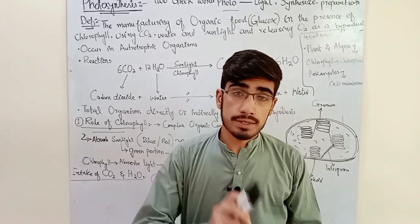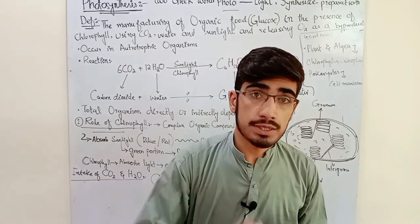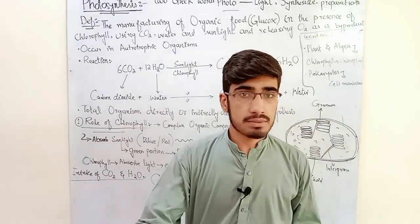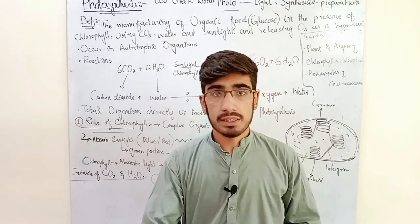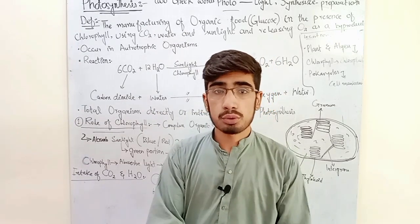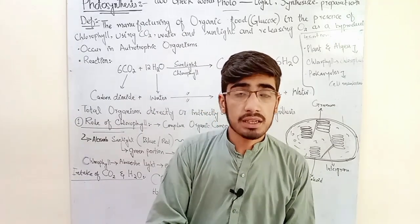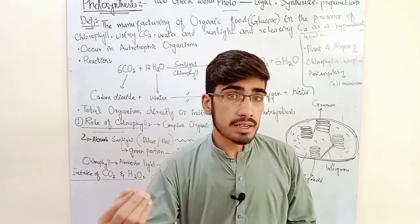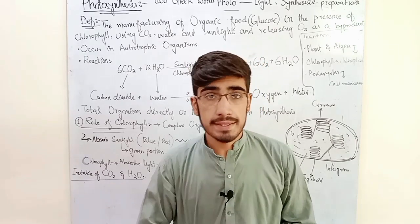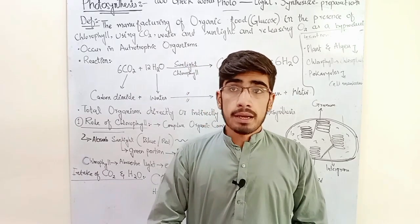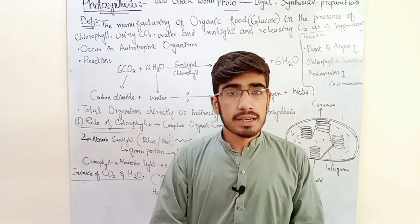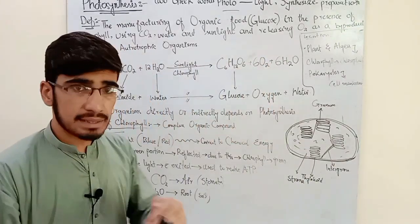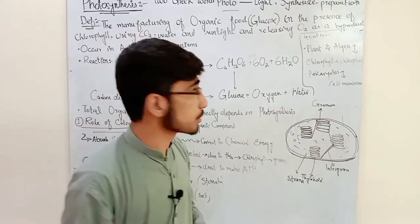The products of photosynthesis are oxygen, which is a by-product released from the body of the plant, and glucose, which is the main organic product.